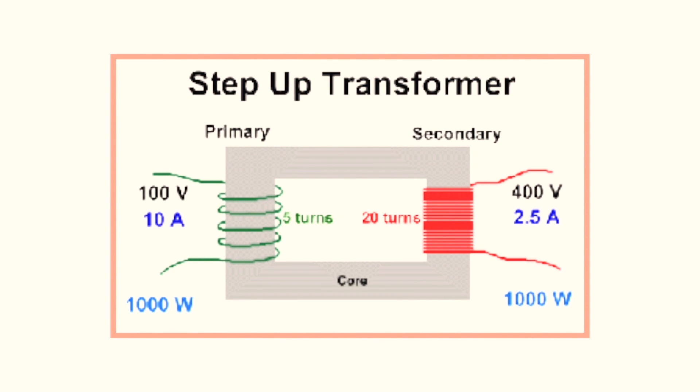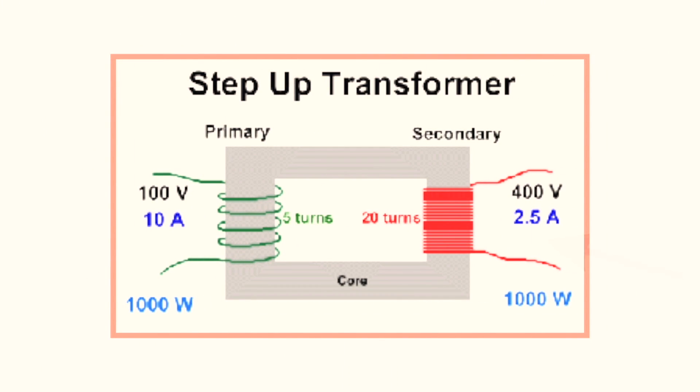Most of them can fit into one of two categories: step up or step down. The step-up transformer turns a lower voltage with a relatively higher current into a higher voltage with a relatively lower current. So why the drop in current? For two reasons: first, the first law of thermodynamics, and two, this is not a free energy device.